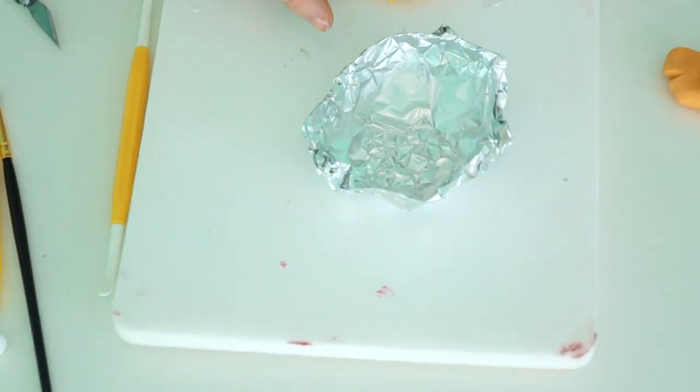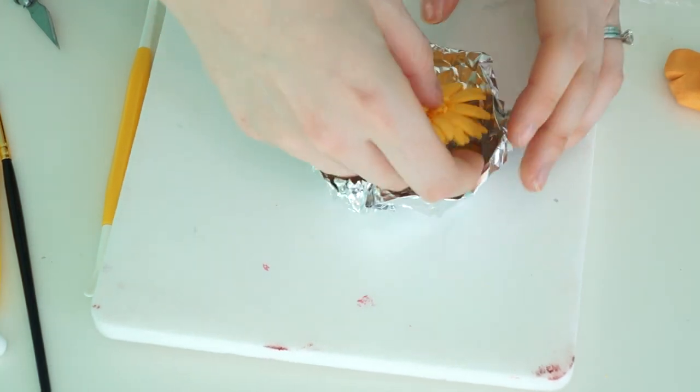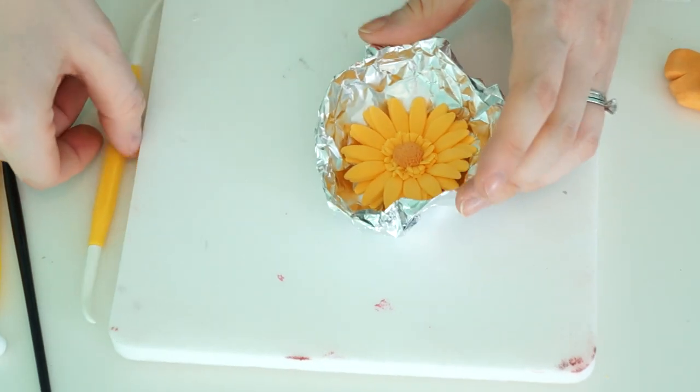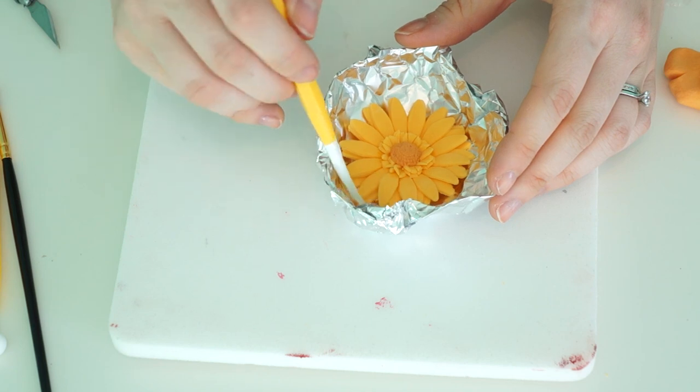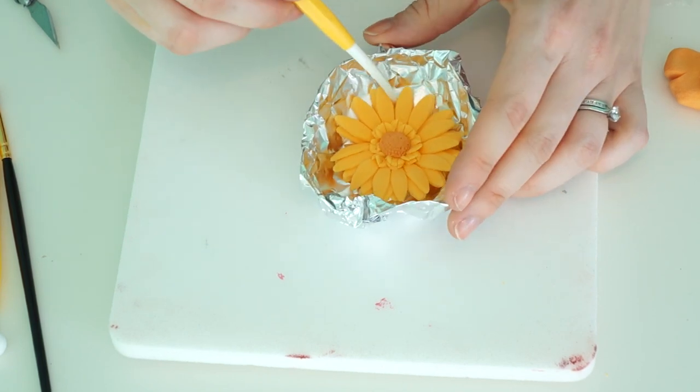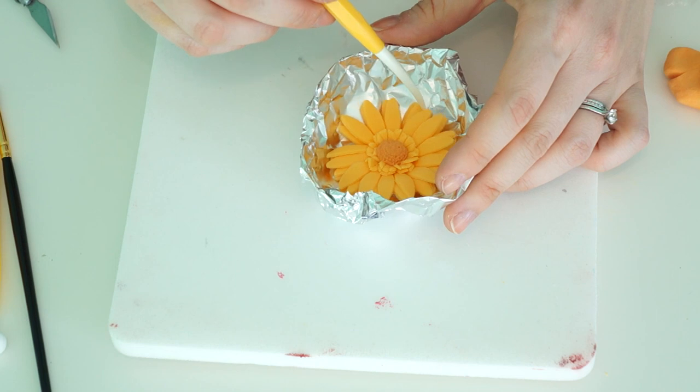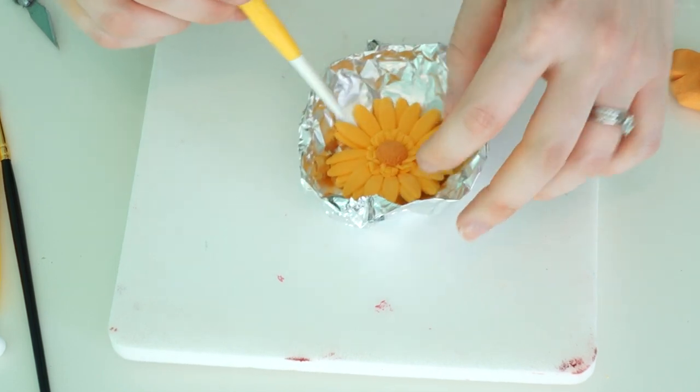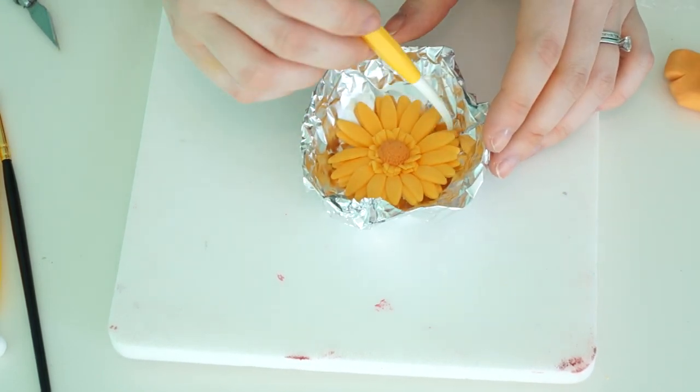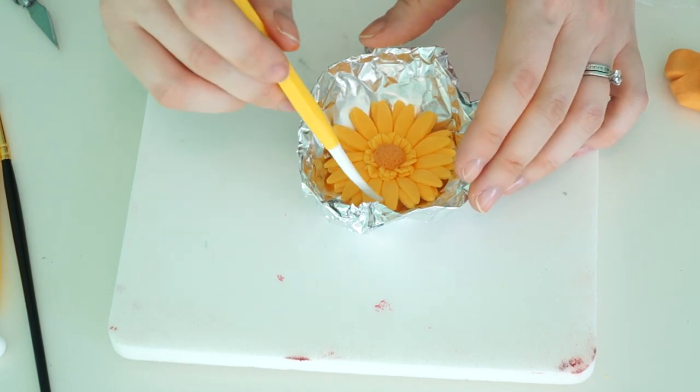So I'm just going to pick up the flower and just pop those in there and kind of just pull the petals around, just because we want to create a curve on the back of the flower.